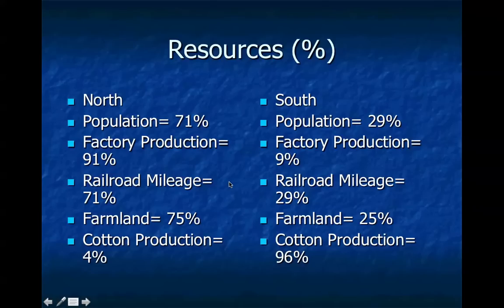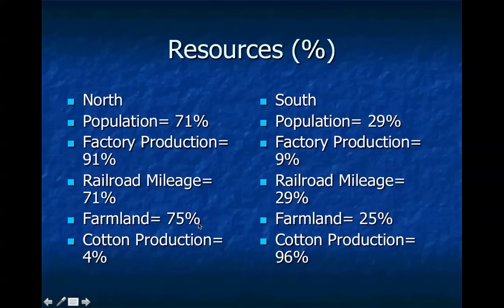Railroad mileage was another major advantage. In today's society we don't think much about railroads, but when you're fighting a war in the 1860s, railroads were extremely important for transporting troops and goods. The North had far greater railroad resources and many more miles of track. As for farmland, still 75 percent of it was in the North. We talk a lot about plantations and slavery in the South, but even more total farmland — including corn and Midwest crops — was in the North.